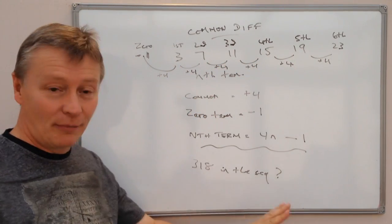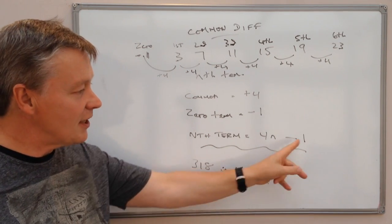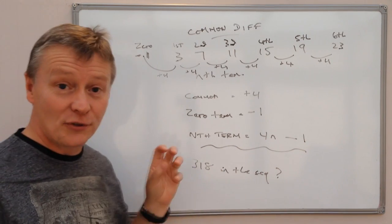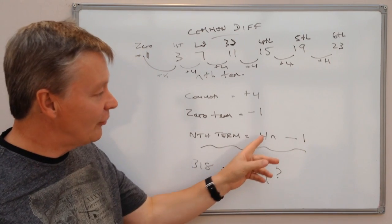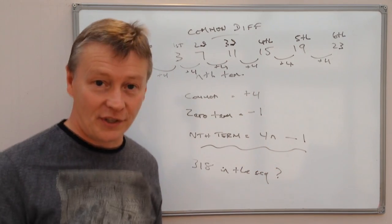So it's not going to be in the sequence. The other thing you can do is you can use this formula. 318 take away 1 is 317, and 317 would have to be divisible by 4 in order to be a number in the sequence.